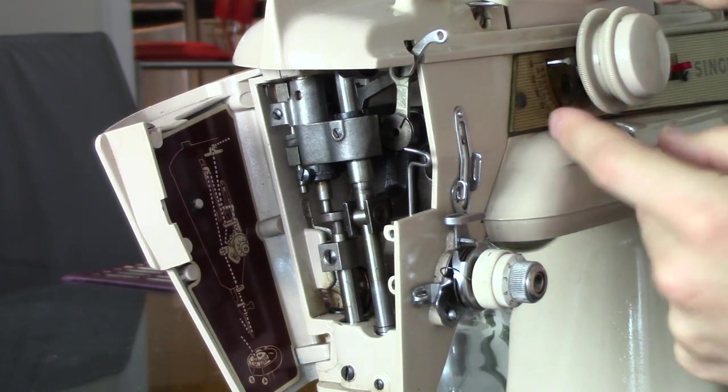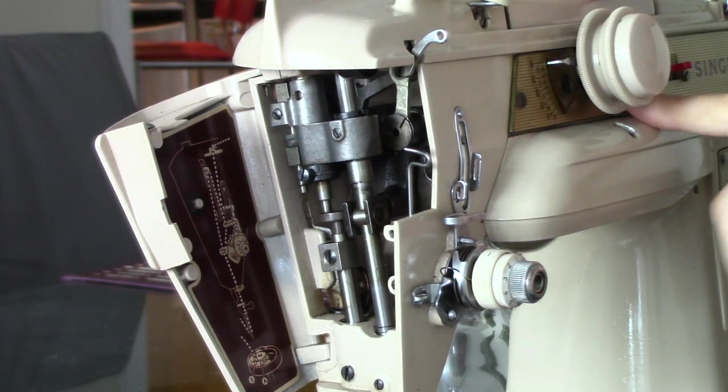So to thread this machine for straight chain stitch, make sure it's set on A and K so it's in a straight.